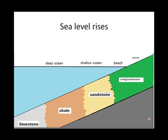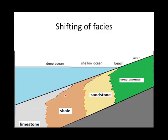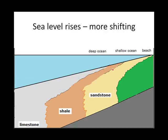Here we have our layers forming, and sea level is going to rise. Why did sea level rise? It could be a number of reasons — it could be because of ice ages: if the ice age is over and the glaciers melt, sea level will rise. It may not be the sea level rising per se, but the land going down due to tectonics or isostasy. It doesn't really matter what caused sea level to rise; sea level does tend to rise and fall over time, and in geology, we have lots and lots of time. Notice that the deep ocean is now over the old layer of shale — that's not quite right yet. As more sediment is forming, you're going to see the facies start to shift, in this case shifting to the right. Now the shallow ocean is forming shale, and the beach is forming sandstone. Let's raise the ocean even further — the facies have shifted over even more.